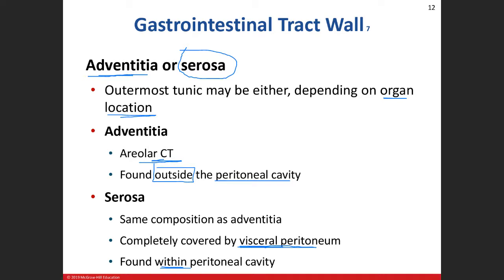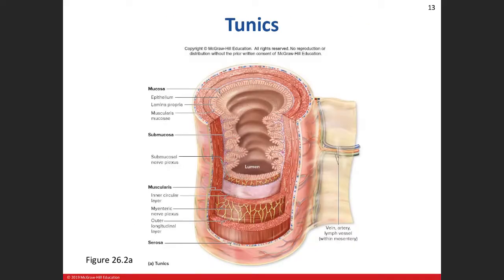The digestive system is one long tube from mouth to anus. Some parts of the tube are bigger, some smaller, and certain parts like the stomach have irregular bulges — but it's still part of that tube, like a holding bag. Keep that in mind: one long tube from mouth to anus.